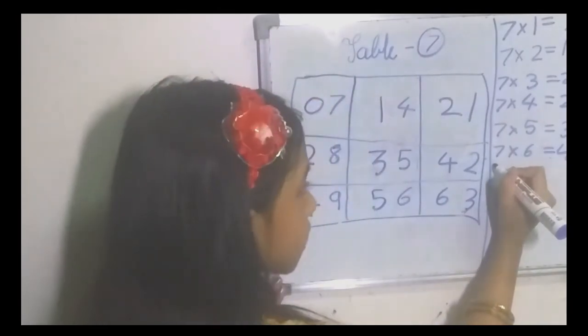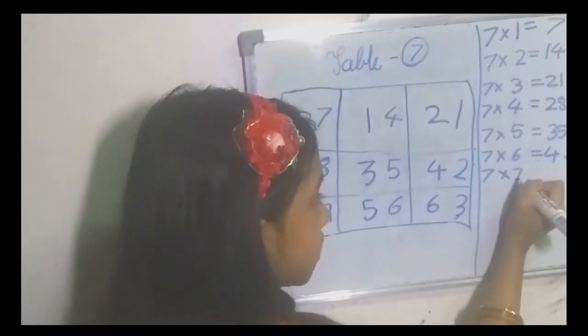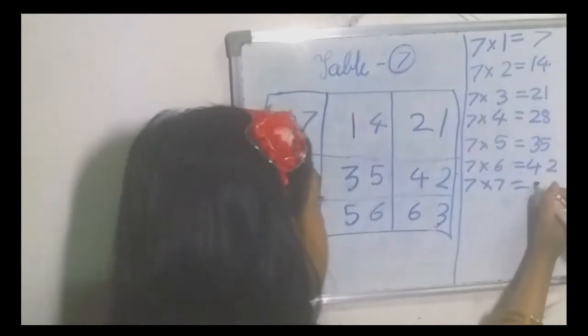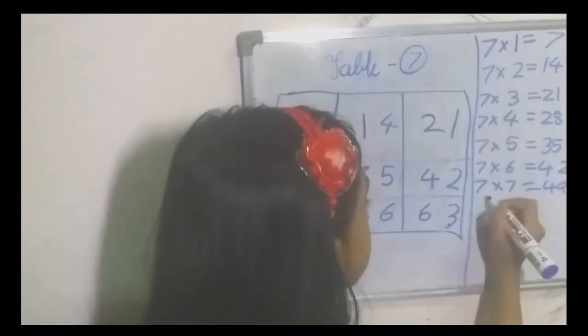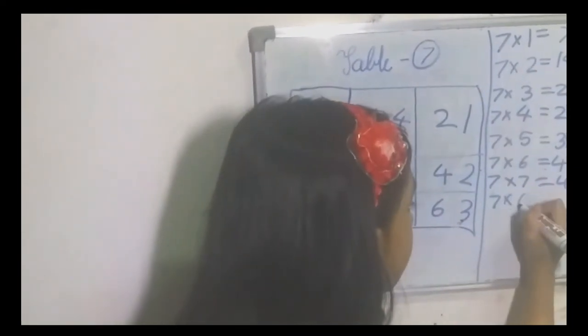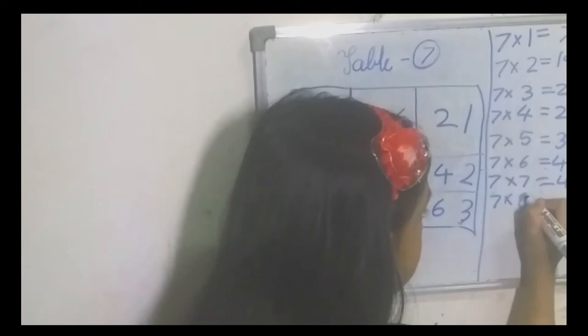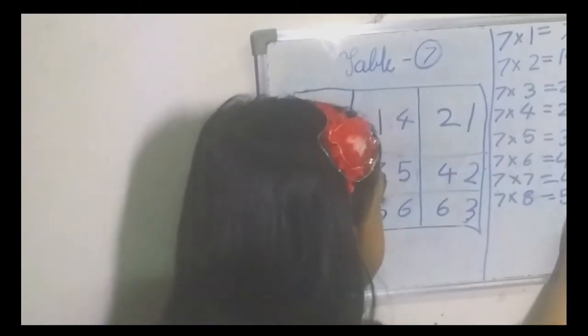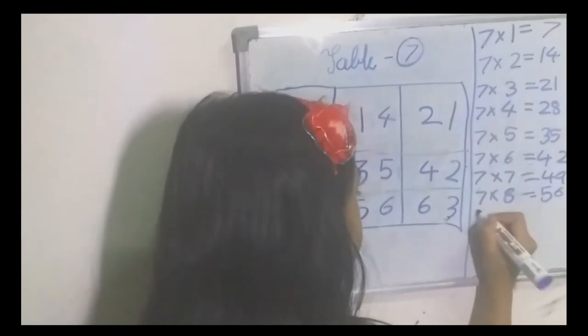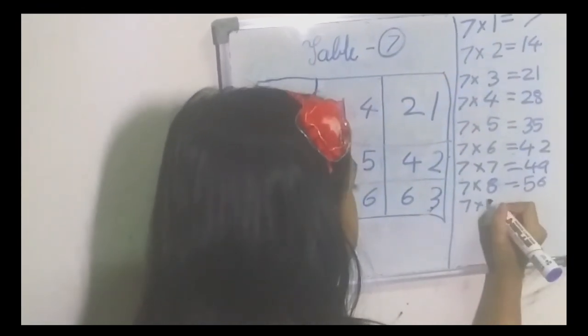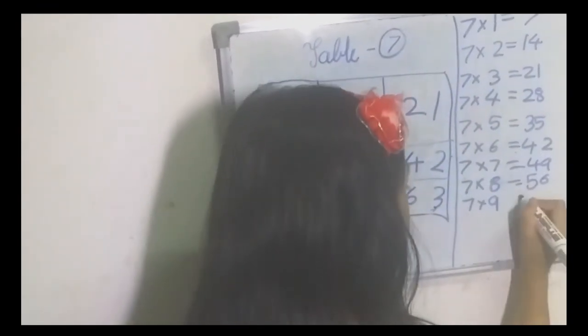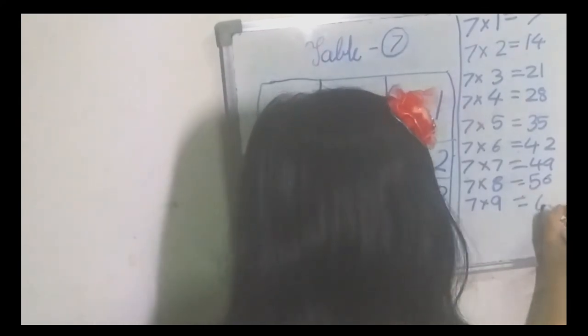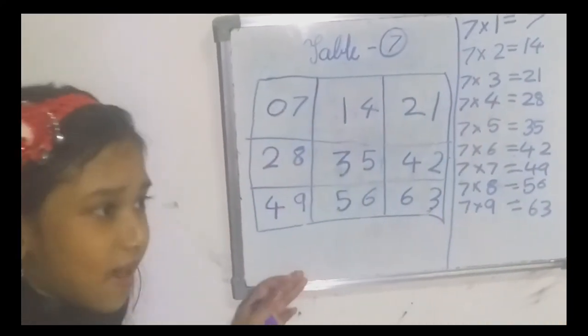Seven sixes are forty-two. Seven sevens are forty-nine. Seven eights are fifty-six. Seven nines are sixty-three.